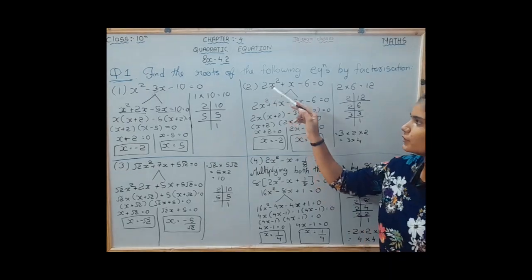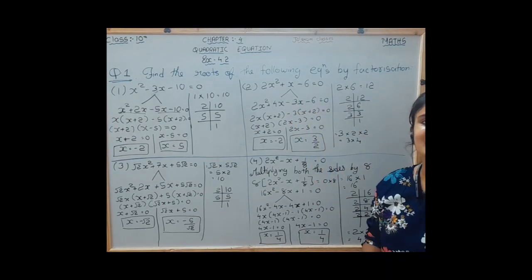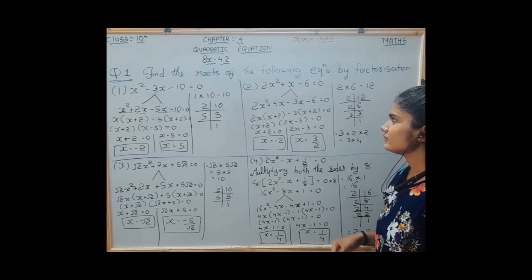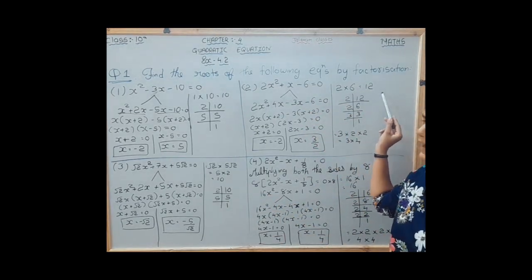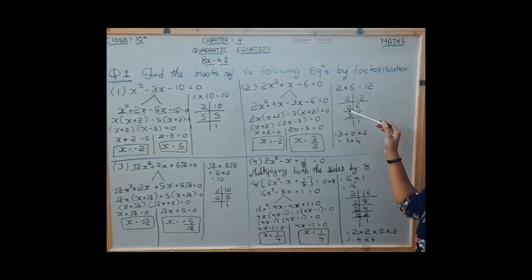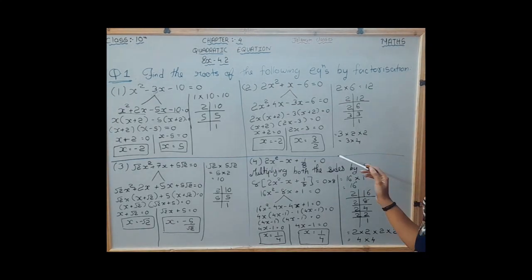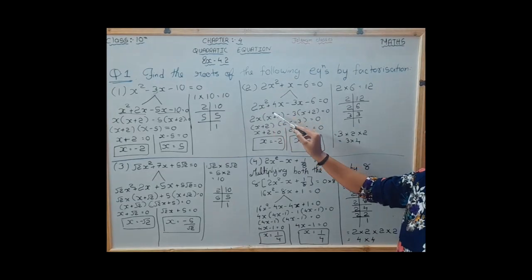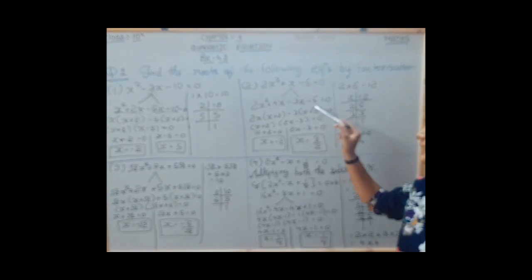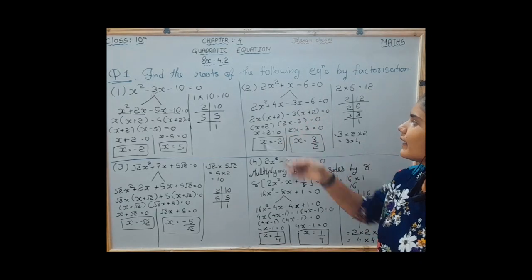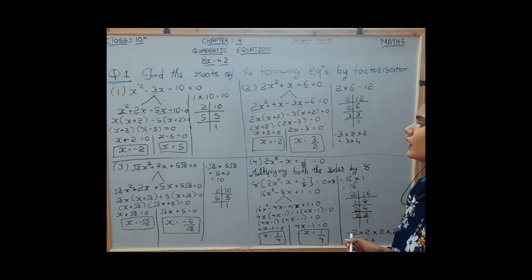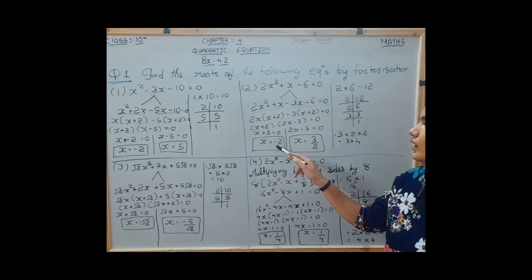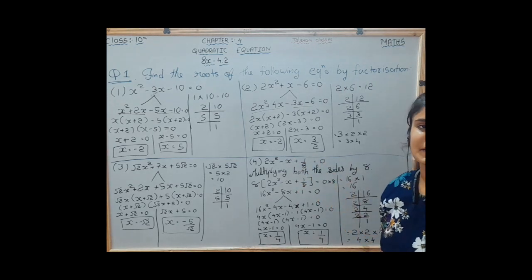In question number 2, we are given 2x squared plus x minus 6 is equal to 0. We follow the same method: 2 into 6 equals 12, and the factors are 3 and 4. The four-term equation becomes 2x squared plus 4x minus 3x minus 6 equals 0. By making pairs and taking common factors, we get the roots of x as minus 2 and 3 by 2.